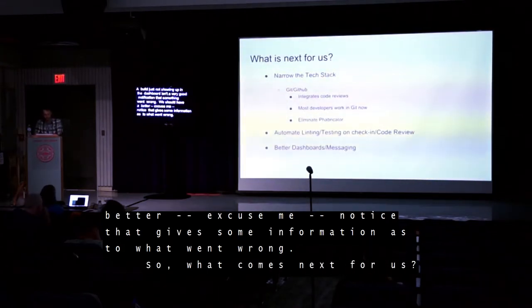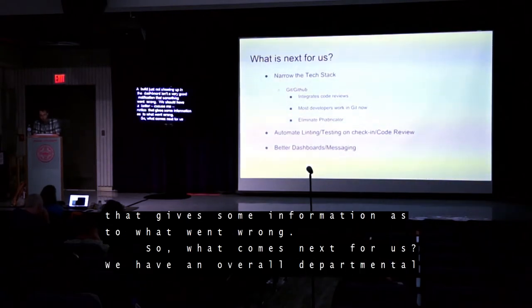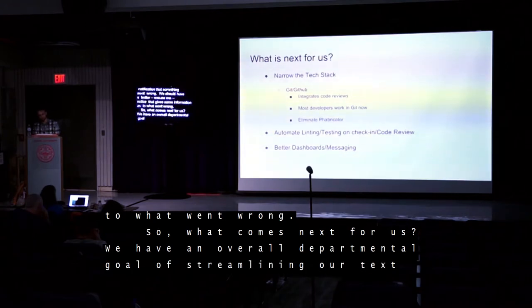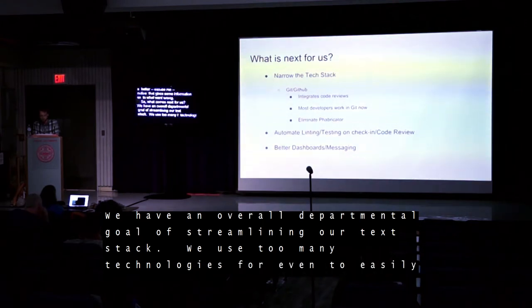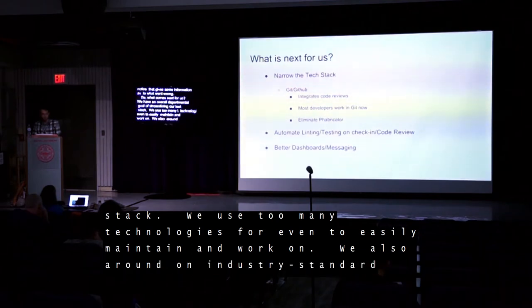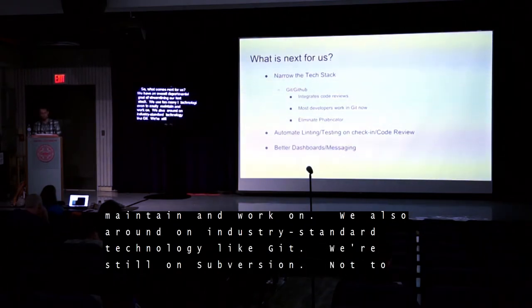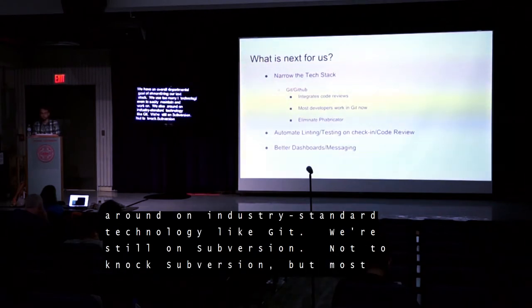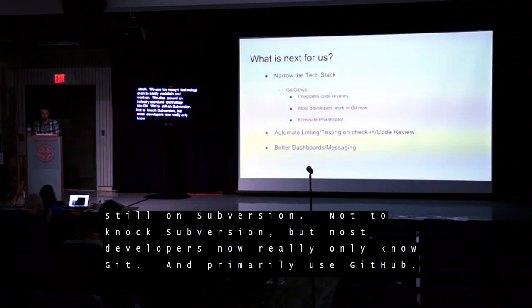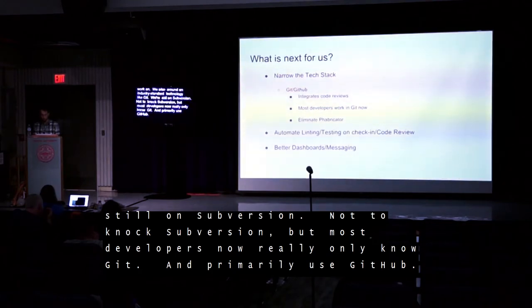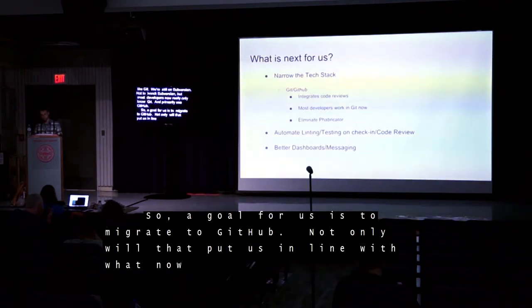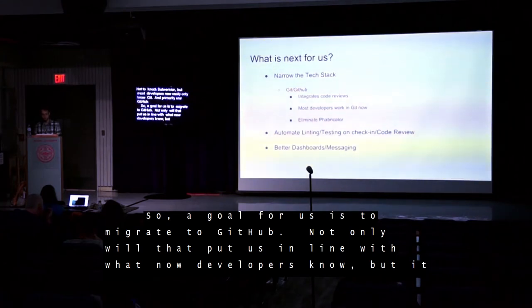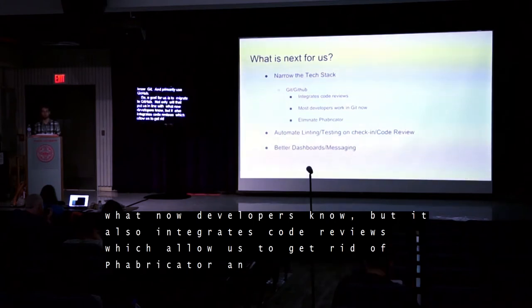What comes next for us? We have an overall departmental goal of streamlining our tech stack — we use too many technologies for everyone to easily maintain and work on. We also aren't on industry-standard technology like Git; we're still on Subversion. Most developers now really only know Git and primarily use GitHub. So a goal for us is to migrate to GitHub, which will also integrate code reviews, allowing us to get rid of Fabricator and use a service we're already paying for.